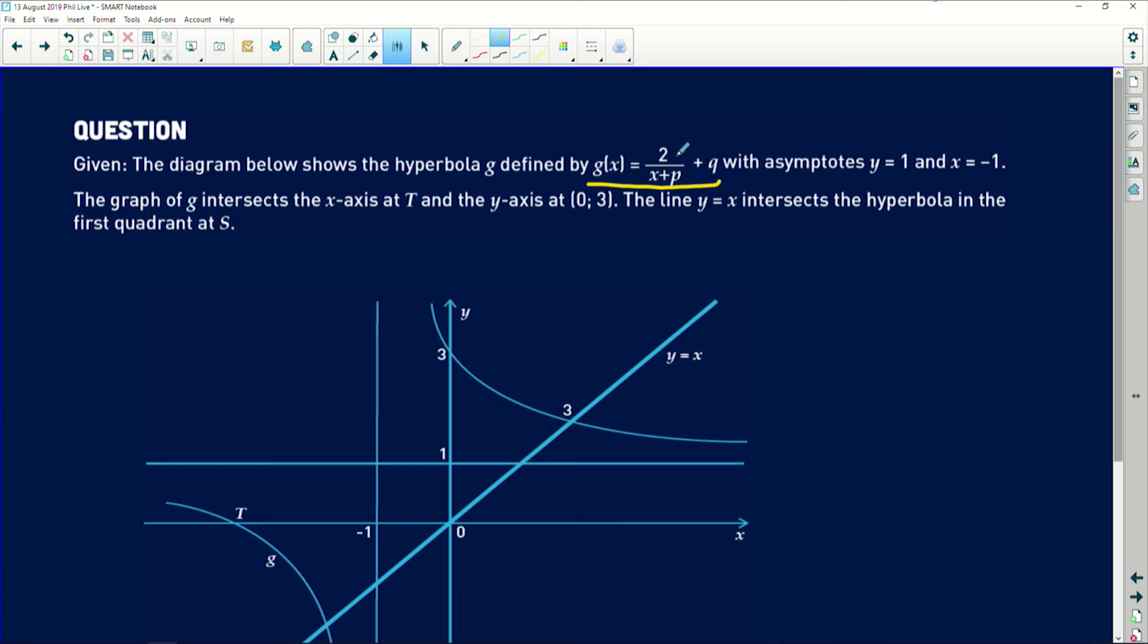With asymptotes y equals 1, which is this line over here, and x equals negative 1, which is this line over here. The graph of g intersects the x-axis at t, that little point over there, and the y-axis at 0, 3, which is this intercept over there. The line y equals x intersects the hyperbola in the first quadrant at s.